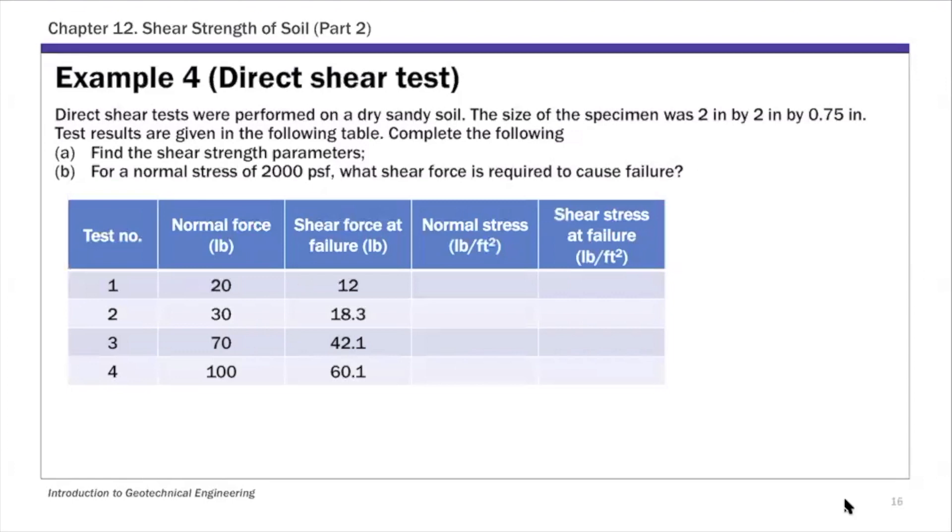This is example four, direct shear test. For this example you have four sets of normal force and the corresponding shear force at failure. We're going to find the shear strength parameters and predict the shear force required to cause failure for different normal stress. This is a dry sandy soil.